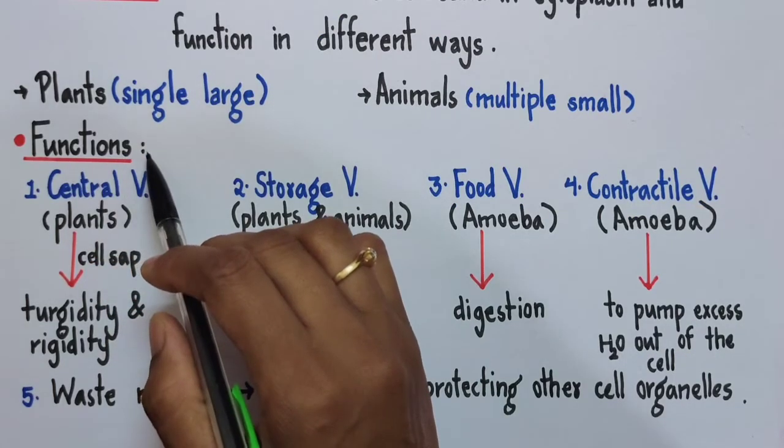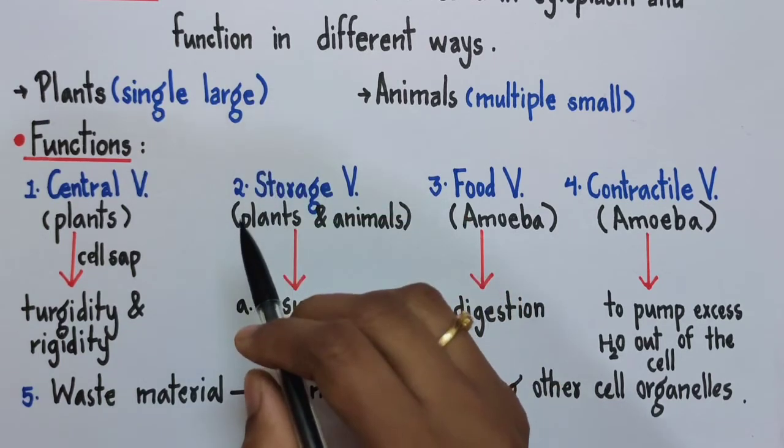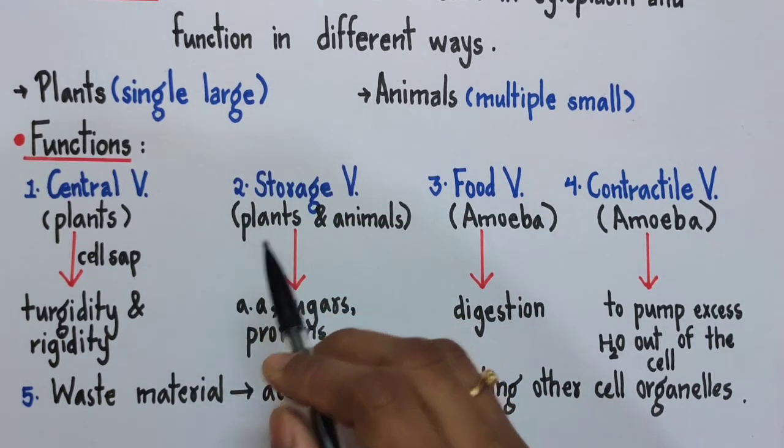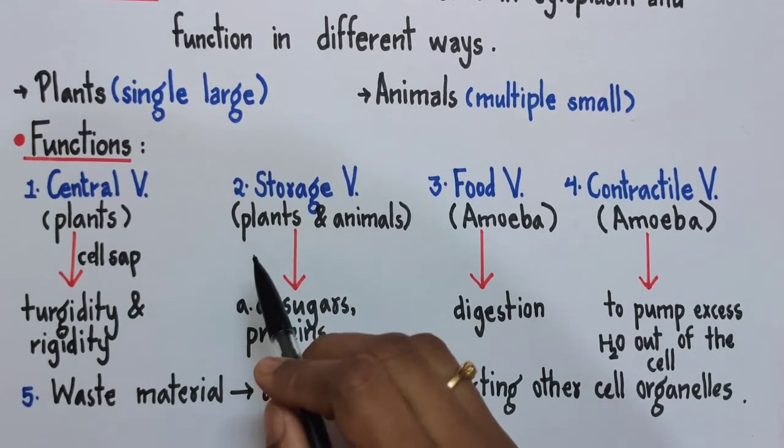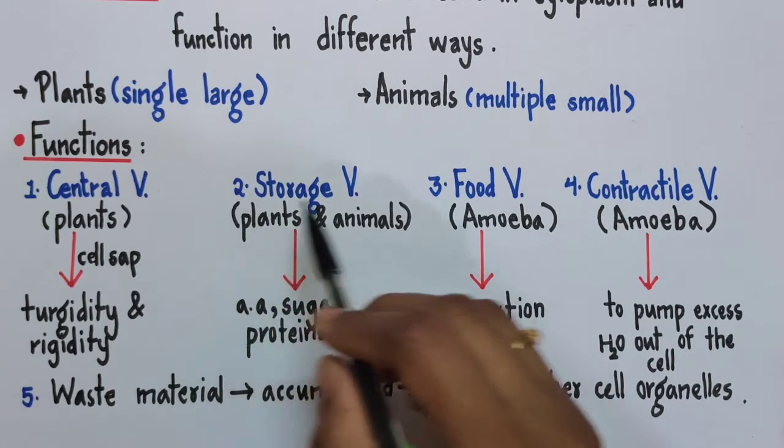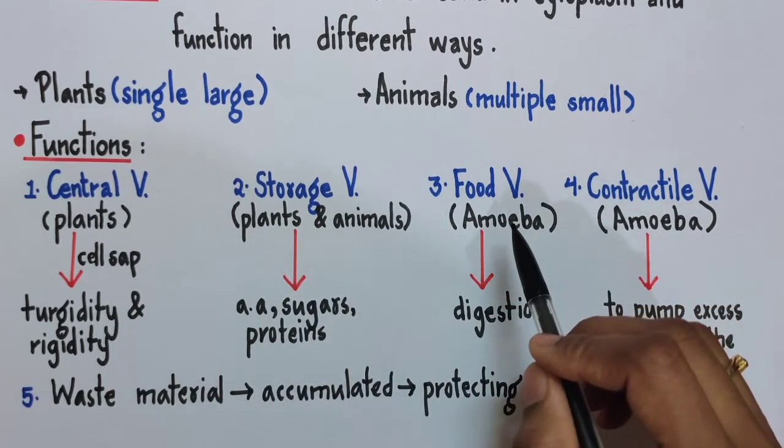Moving on to the functions of vacuoles, there are different types of vacuoles which perform different functions, and a single cell can have more than one vacuole and more than one type of vacuole as well. So let us look at the different types of vacuoles and their respective functions.